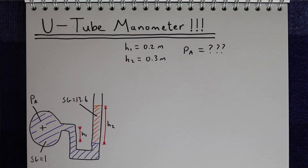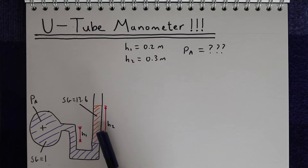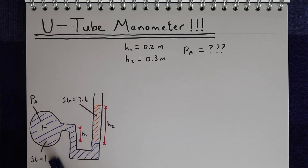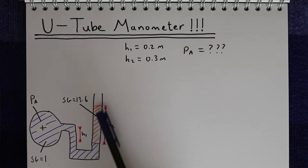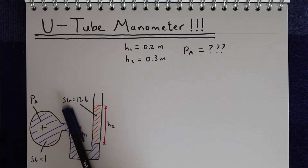In this video we're looking at a fairly typical manometer problem, where we're trying to measure the pressure in a pipe, Pa, using a manometer where we've got two fluids. The first fluid is the water from our pipe, and that has a specific gravity of 1, and the second fluid is our gauge fluid, which is mercury, which has a specific gravity of about 13.6.